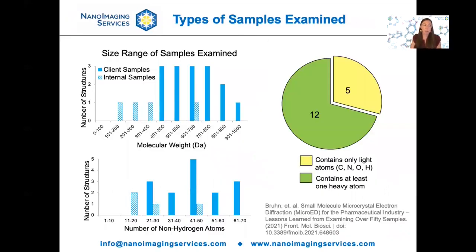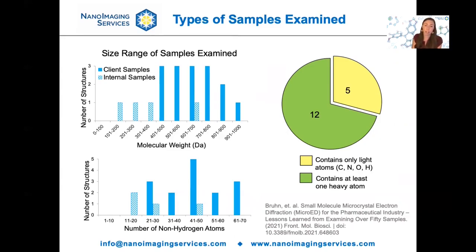We recently published a paper where we looked at more than 50 samples submitted by our clients across the pharmaceutical industry. These are small molecule samples ranging in size from 400 to about a thousand daltons. In some cases, they did not contain any atoms larger than oxygen, which can make data processing and structure solution phasing more challenging. We were really encouraged that even for these rather large compounds lacking any heavy atoms, we were still able to determine structures.